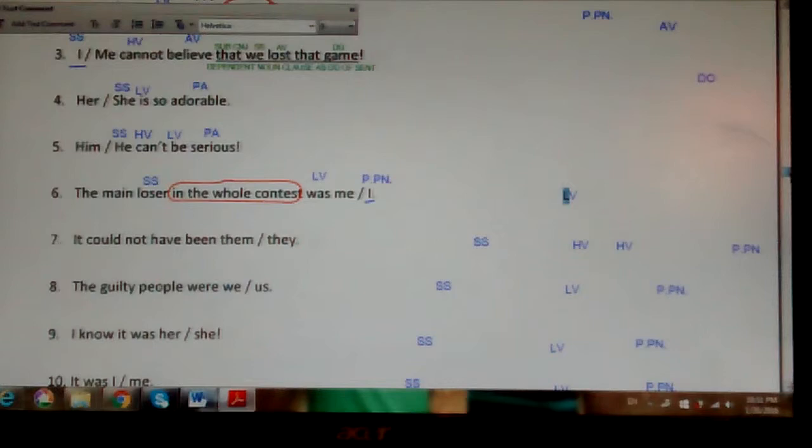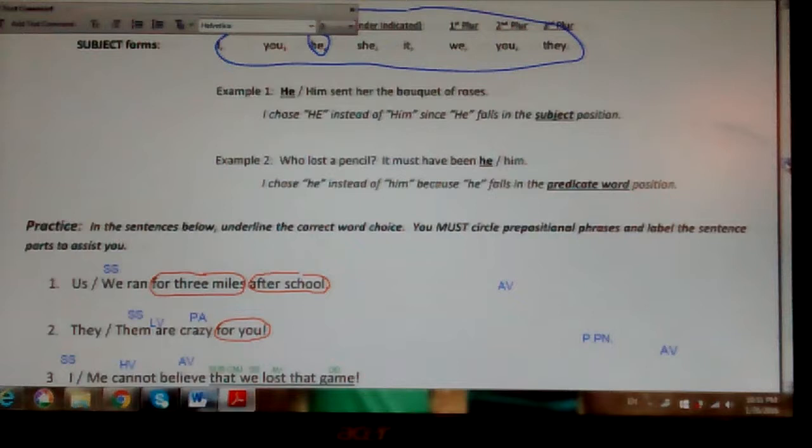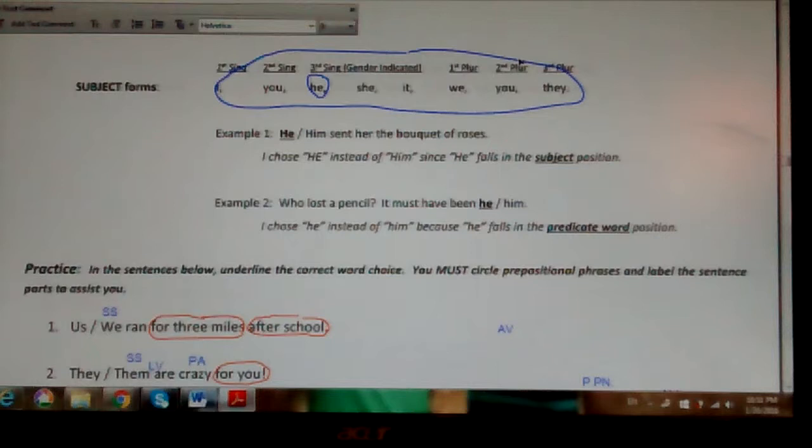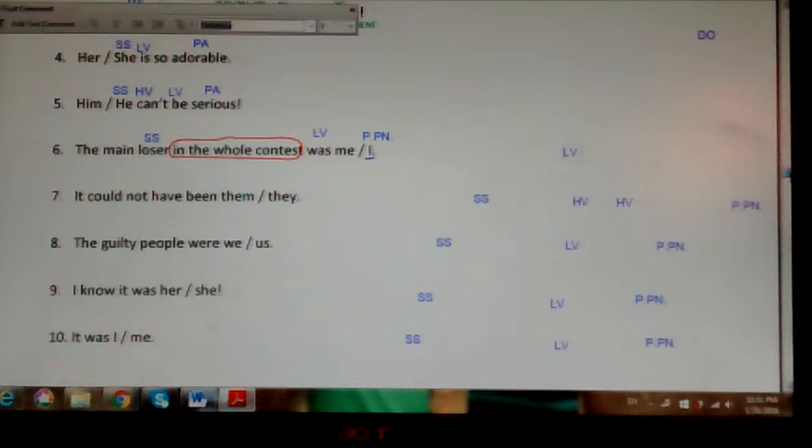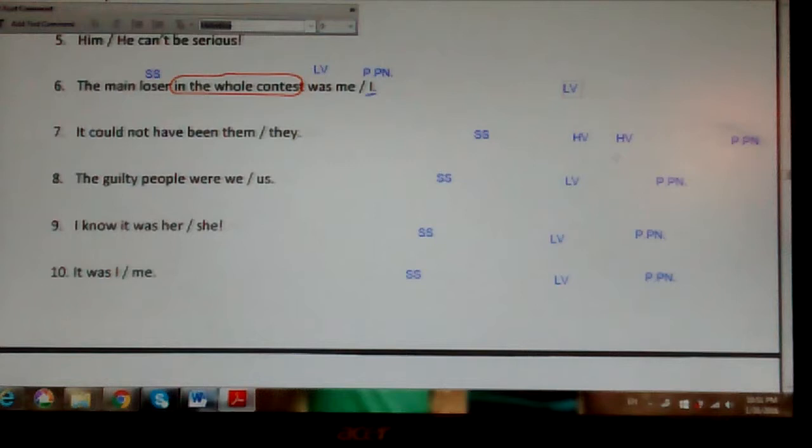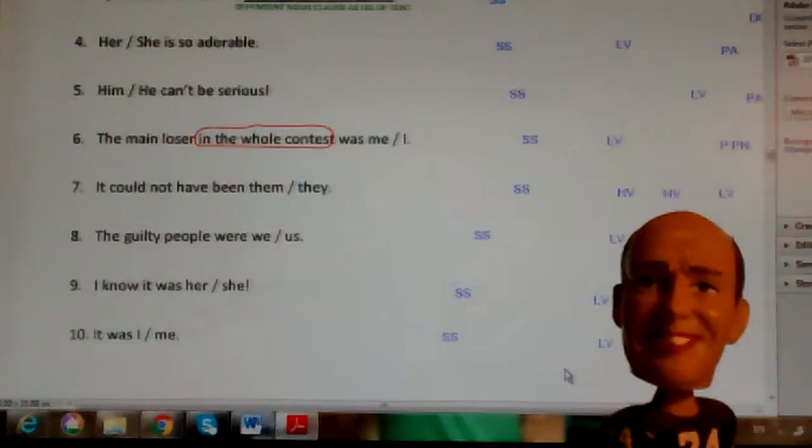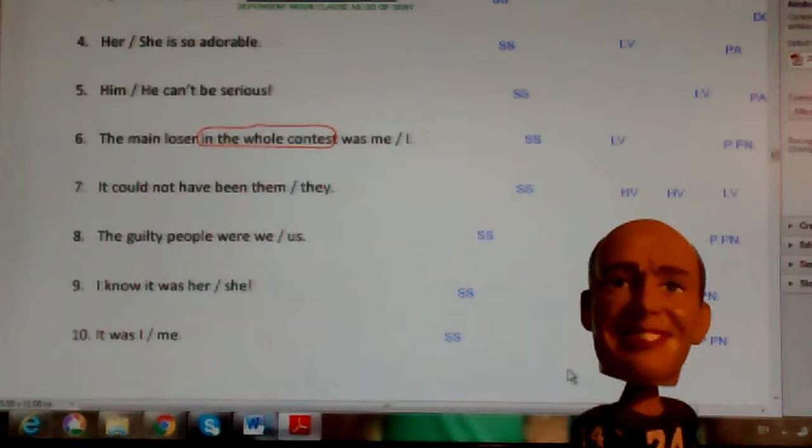Wanted to go back up to this previous one. Sorry about that. He can be serious, predicate adjective. So getting back to number six, the loser was I. Number seven, it could not have been them or they. Keep in mind I'm going off of this pool of words, these pronouns: I, you, he, she, it, we, you, they. So they is a subject form and I have to use it in place of a predicate pronoun. It could not have been them or they. I do have a main linking verb been, helping verb.